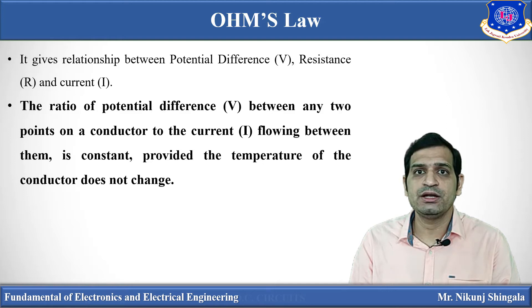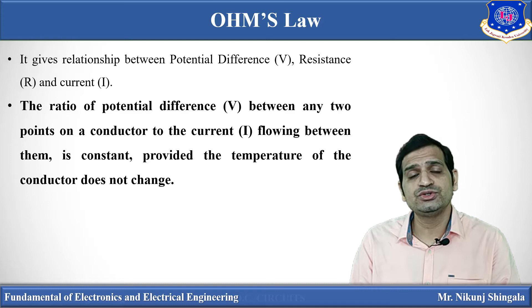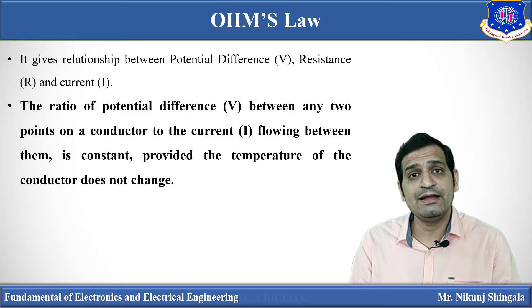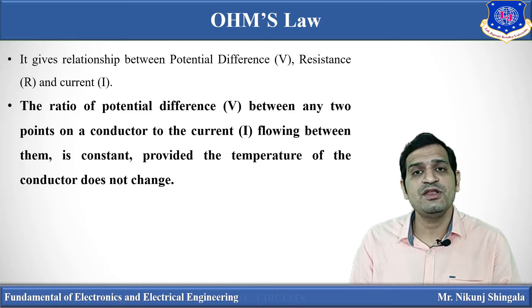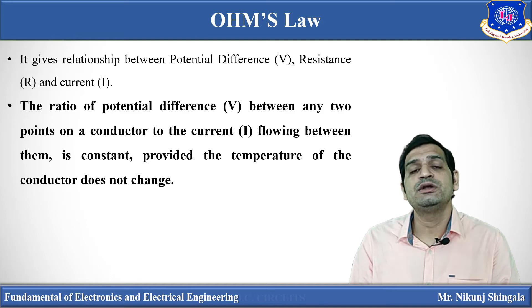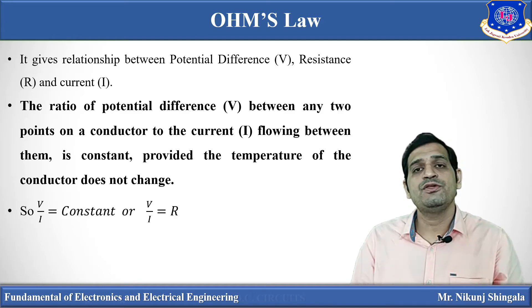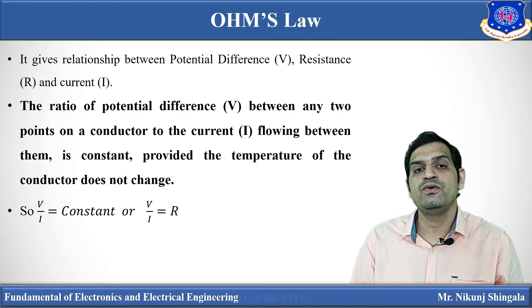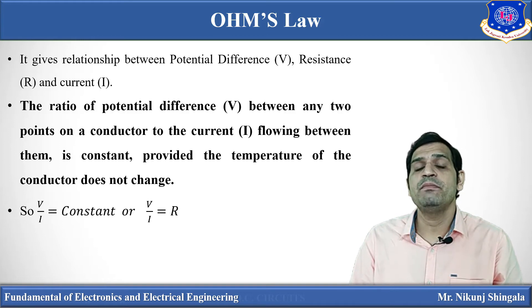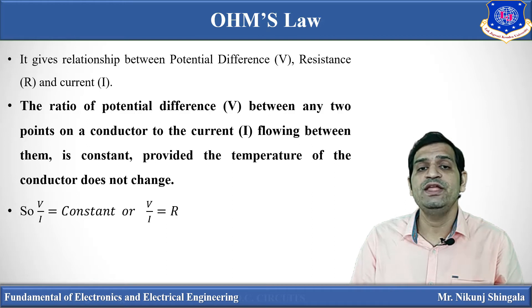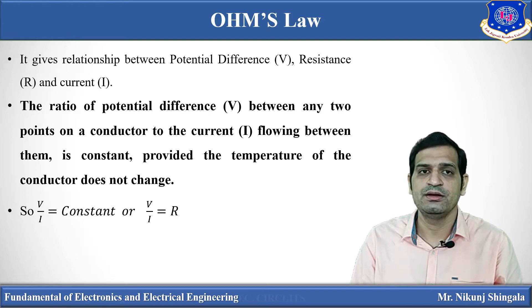It states that the ratio of potential difference V between any two points of a conductor to the current I flowing between those two points is constant, under the condition that the temperature of the conductor does not change. So the ratio of V and I is equal to a constant. Mathematically, V divided by I equals R, where R is the resistance of the conductor.